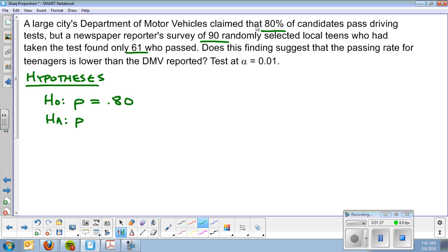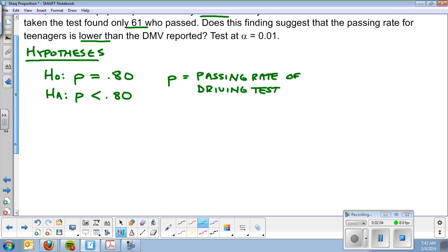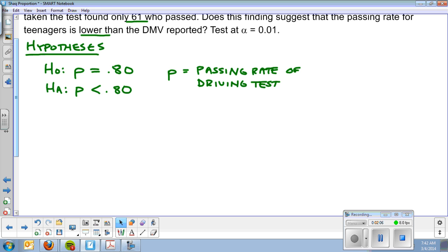We're going to test the alternate. Does this finding suggest that the passing rate for teenagers is lower than .80? And of course, we must identify what P is. It's the passing rate of a driver's exam, driving test. That's step one. The main differences are that we're using P's instead of mu's.